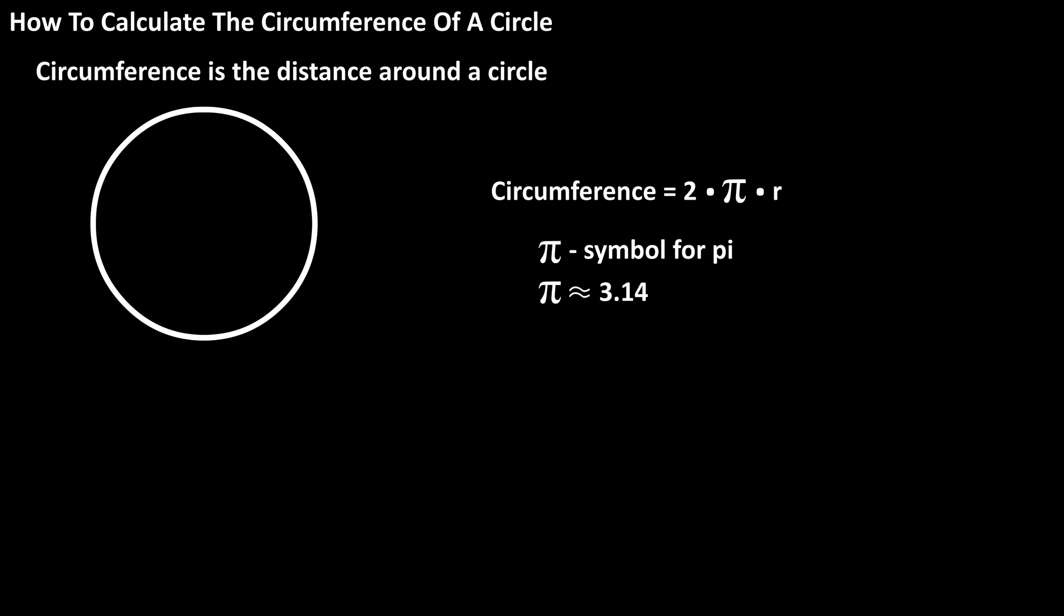In this formula, pi is a constant that goes on forever, but to make things a little easier, we will round it off to 3.14.